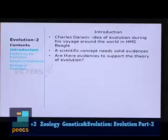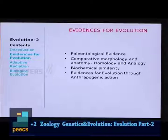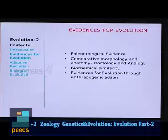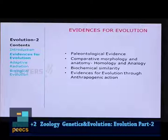For a scientific theory to be valid, there should be evidences. Are there evidences to support the theory of evolution? The answer is yes. Among the various evidences, the most important ones are: paleontological evidence, comparative morphology and anatomy — including homology and analogy — biochemical similarity, and evidences for evolution through anthropogenic action.